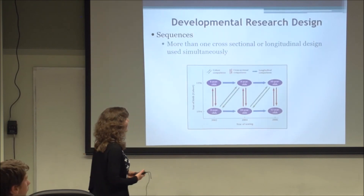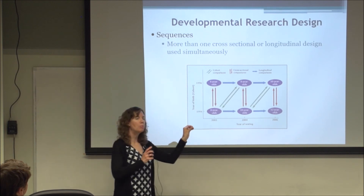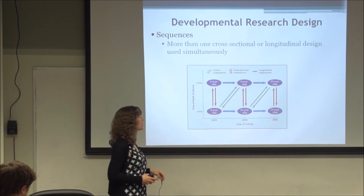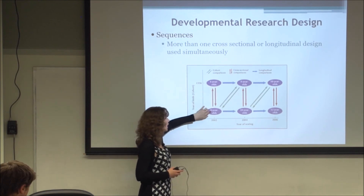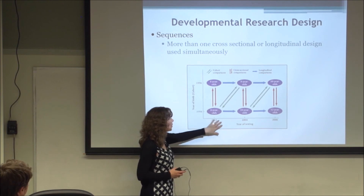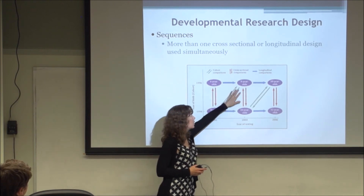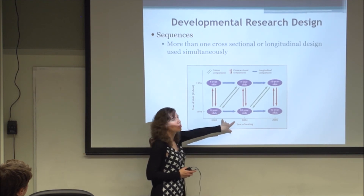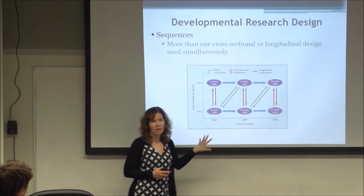There are very complex designs that can help pull apart cohort effects and time-of-measurement effects. For example, you might start with two cohorts — 6 and 8 year olds — in 2002, then retest them in 2004 when they're 8 and 10, allowing you to disentangle cohort and time-of-measurement effects by looking at different aspects of the data. Of course, these designs are very time-intensive and costly.